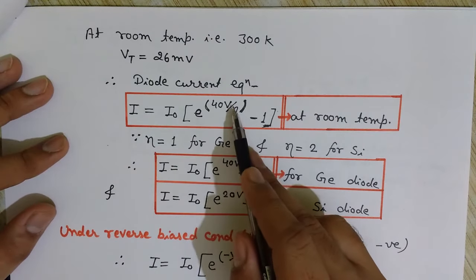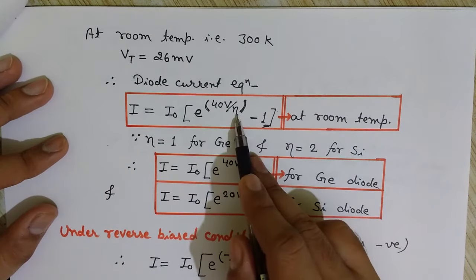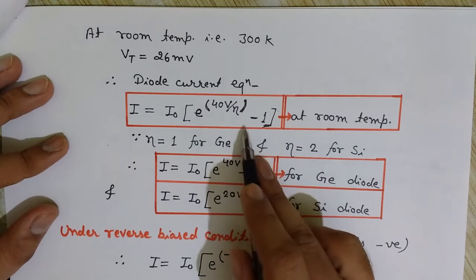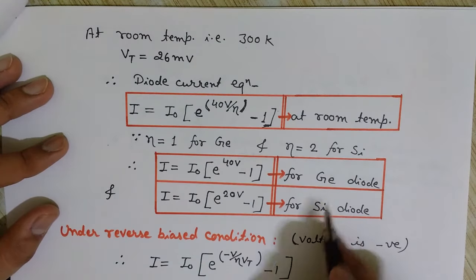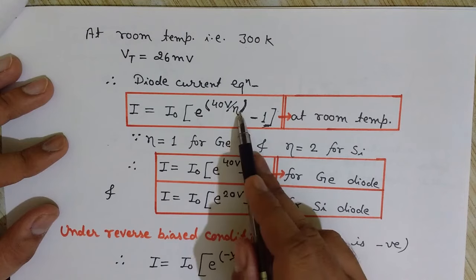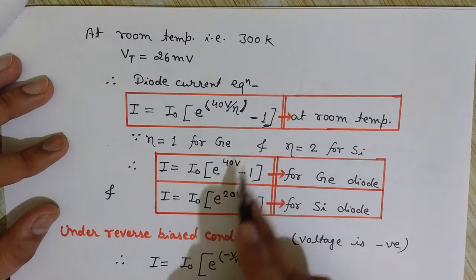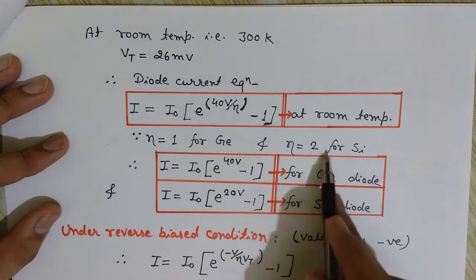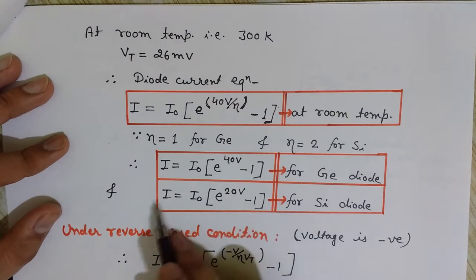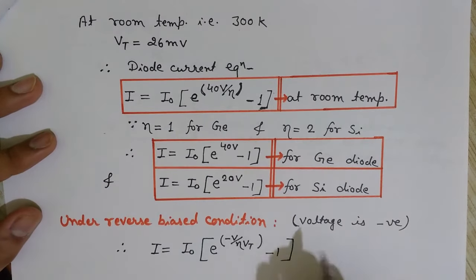The equation still has voltage V and ideality factor eta. Eta is 1 for germanium and 2 for silicon. For germanium, substituting eta = 1 gives: I = I₀(e^(40V) − 1). For silicon, eta = 2, so 40 divided by 2 becomes 20, giving: I = I₀(e^(20V) − 1). This is the equation for silicon diode.